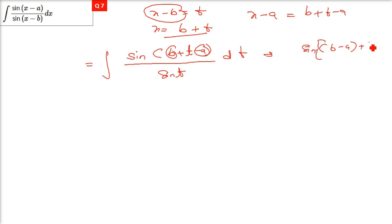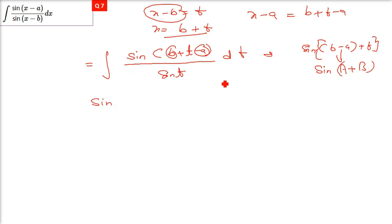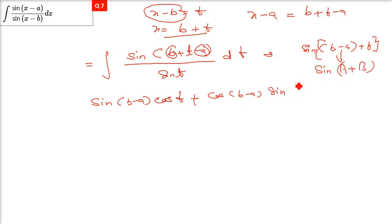Now x − a becomes b + t − a, which is (b − a) + t. The denominator sin(x − b) becomes sin(t). Apply the formula sin(A + B) = sinA cosB + cosA sinB, where A = (b − a) and B = t. Splitting: sin(b−a)·cos(t) + cos(b−a)·sin(t), all over sin(t).